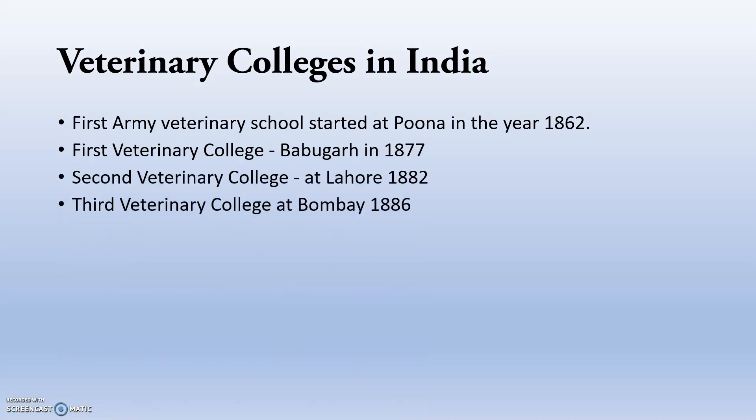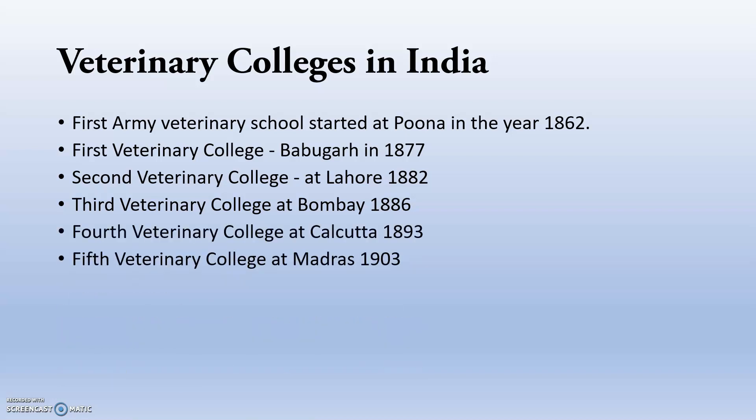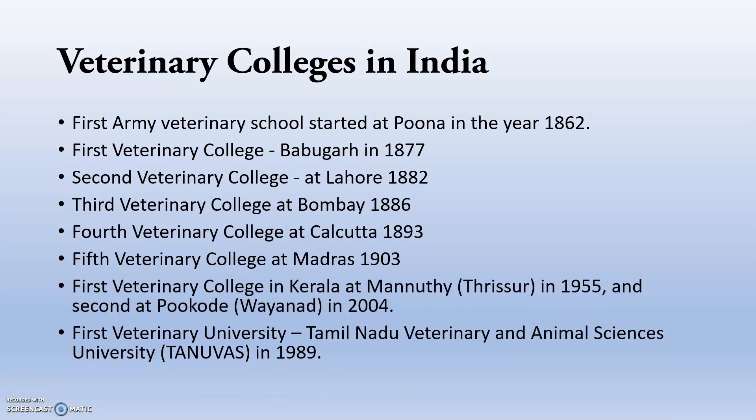The second veterinary college in India was at Lahore in 1882, third at Bombay in 1886, fourth at Calcutta in 1893, and fifth at Madras in 1903. The first veterinary college in Kerala was at Mannuthy, Thrissur in 1955, and the second at Pookode, Wayanad in 2004. The first veterinary university was Tamil Nadu Veterinary and Animal Sciences University (TANUVAS), established in 1989.